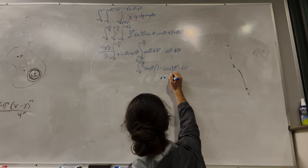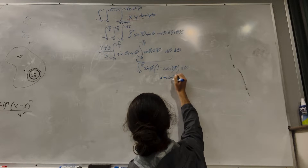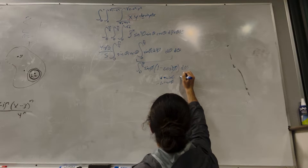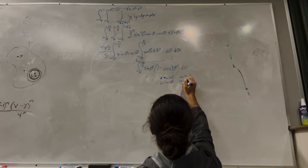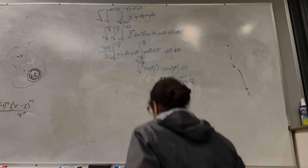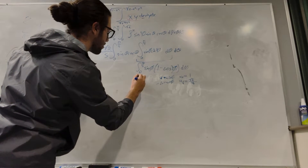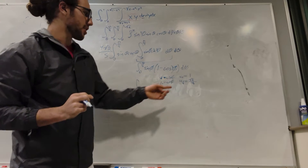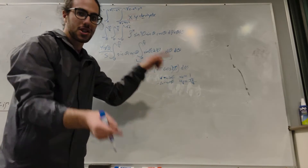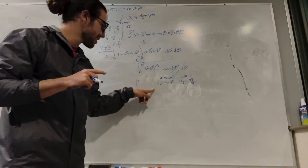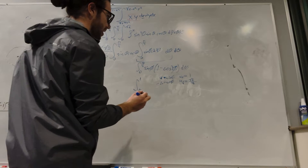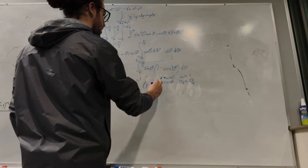u equals cosine phi, so negative du equals sine phi d phi. u of 0 is cosine of 0 equals 1, and u of pi over 4 is cosine of pi over 4 equals square root of 2 over 2. We have a negative here, and our lower bound is bigger than our upper bound. So we swap them — when you swap the bounds you bring a negative outside, which cancels our negative sign. So this goes from square root of 2 over 2 to 1 of (1 minus u squared) du.